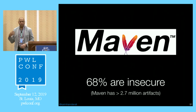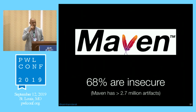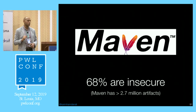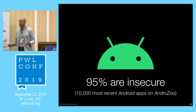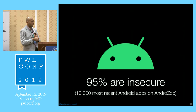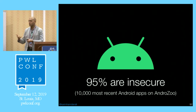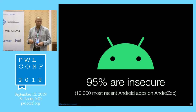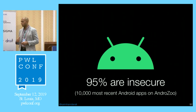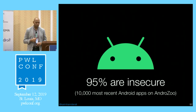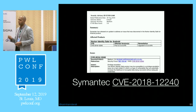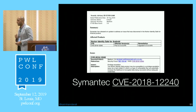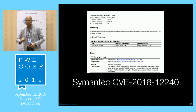CogniCrypt is now released as an open source project under the Eclipse umbrella. We ran our analysis on 2.7 million Maven artifacts and found that 68% are insecure — they have at least one crypto API misuse. We also ran it on 10,000 recent Android applications and found 95% are insecure. We also found a severe security vulnerability in the Symantec Norton IdentitySafe Android application leading to privilege escalation — now publicly disclosed, patched, and in the CVE database.